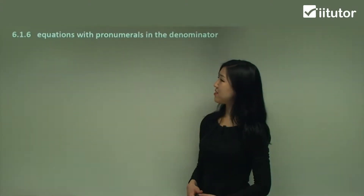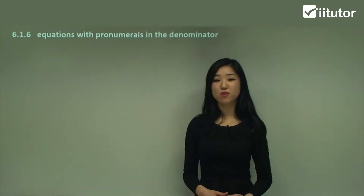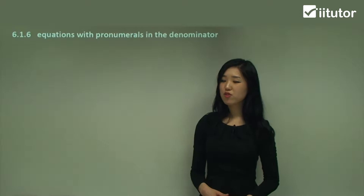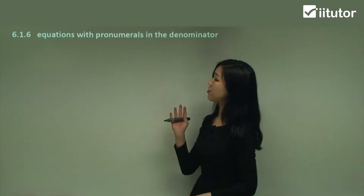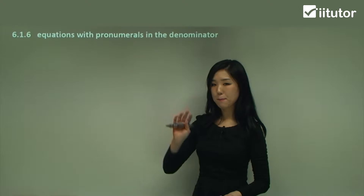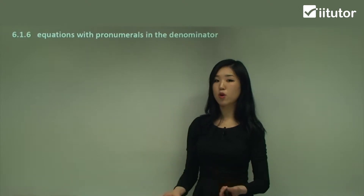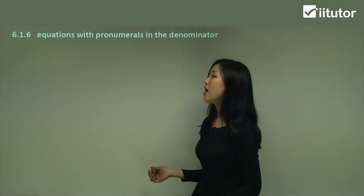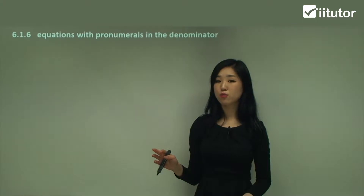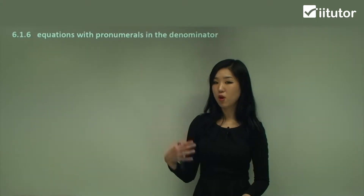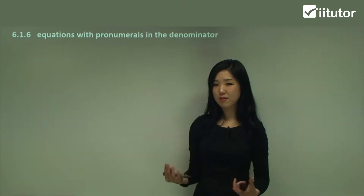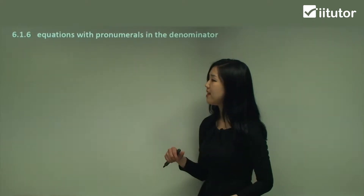Now let's look at equations with pronumerals on the denominator. We're used to fractions with pronumerals only on the top, where the number on the bottom is always a constant. Now we'll have a look at fractions where the pronumeral is on the denominator. But it's actually really easy — it's the same kind of process, so don't be worried.